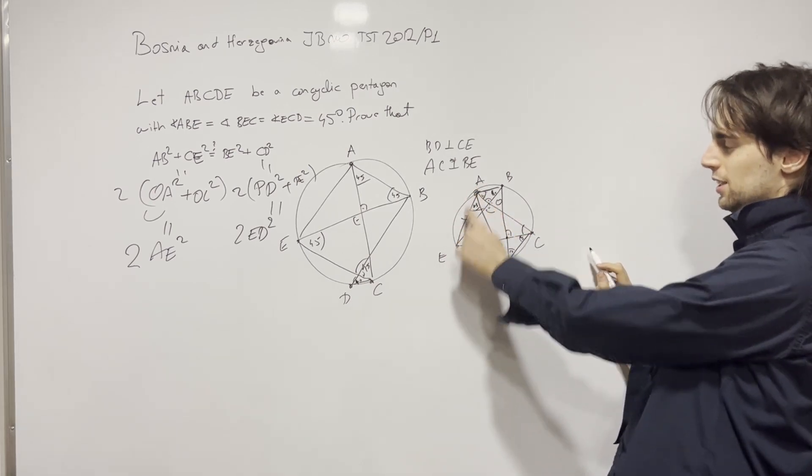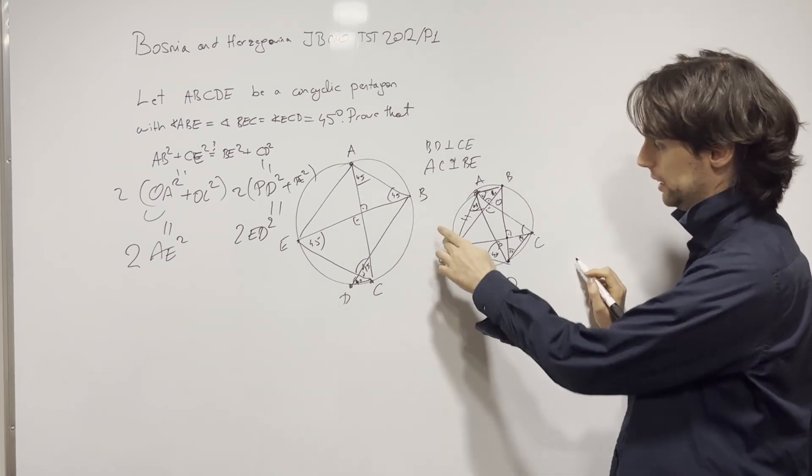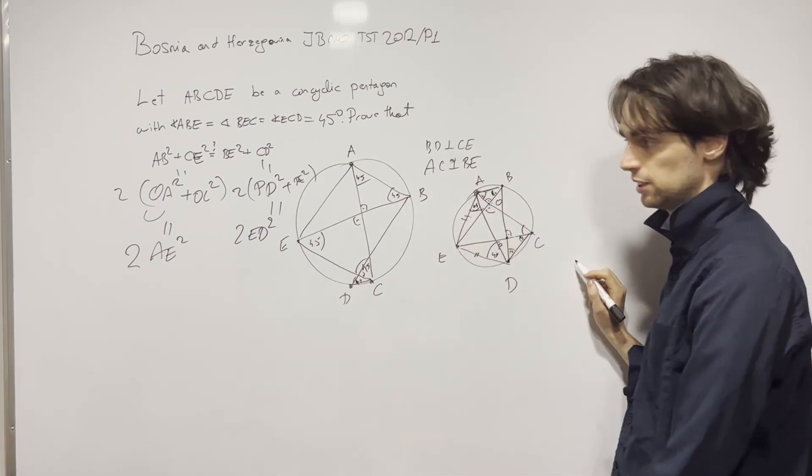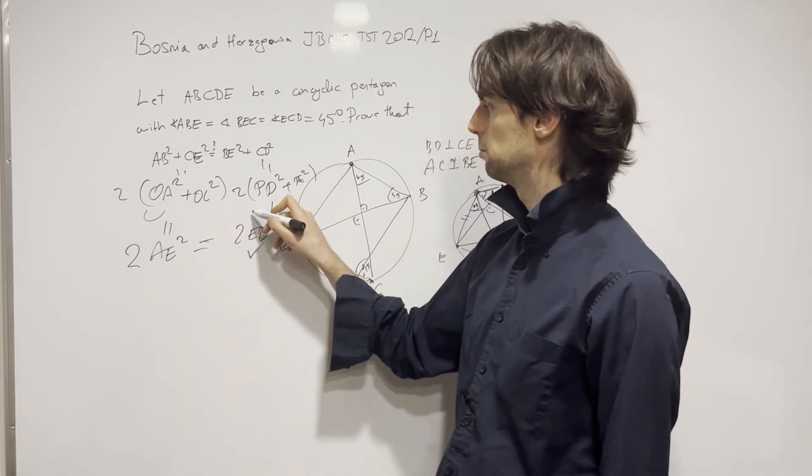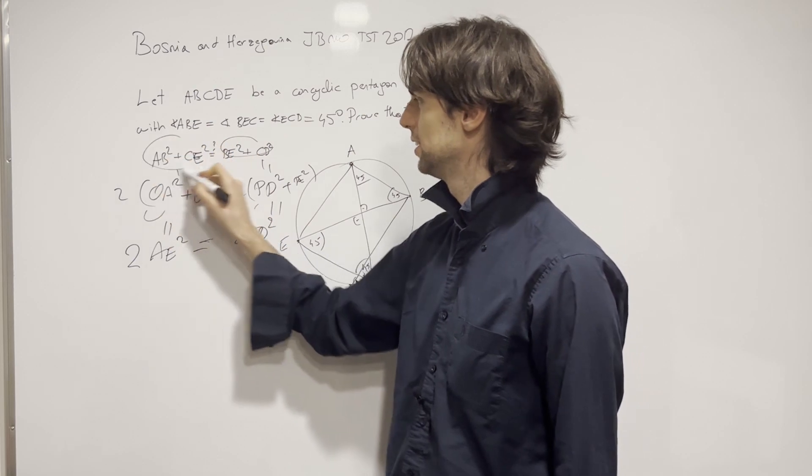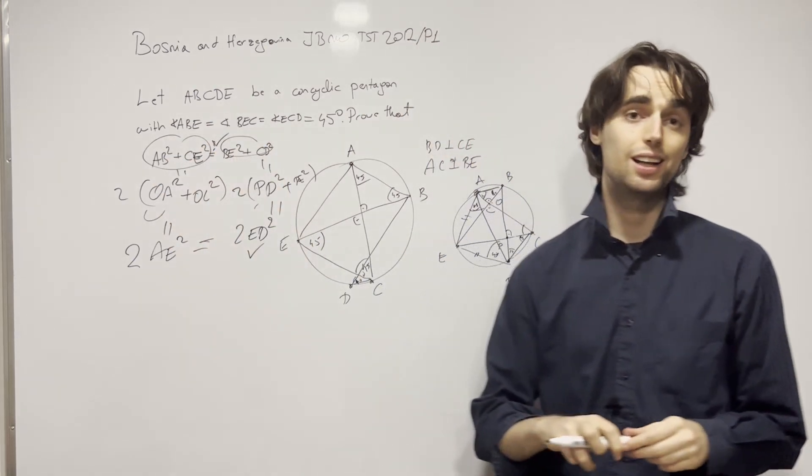And ergo, these side lengths are the same as well. Well, I mean, EAD is an isosceles triangle. And this shows that this is equal to this. And from there it follows that this is equal to this. And so we're done.